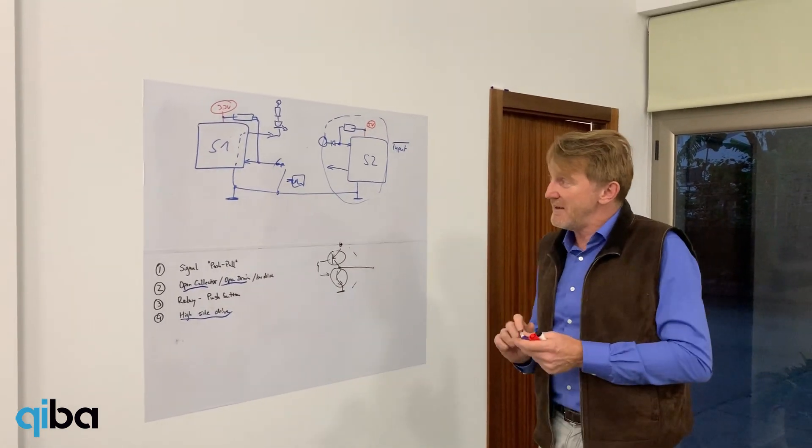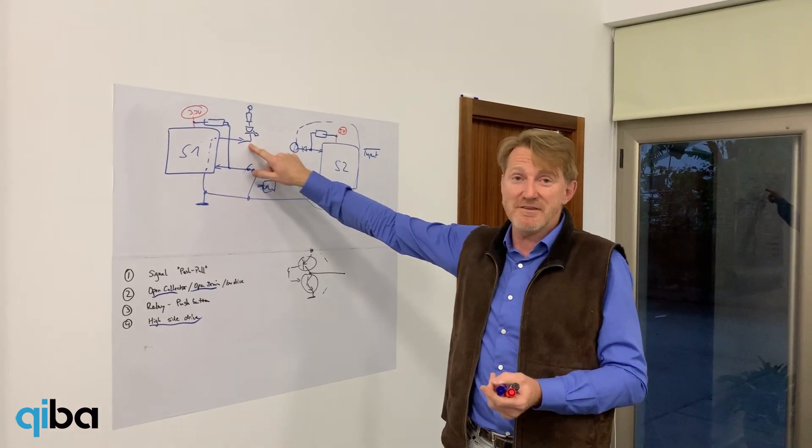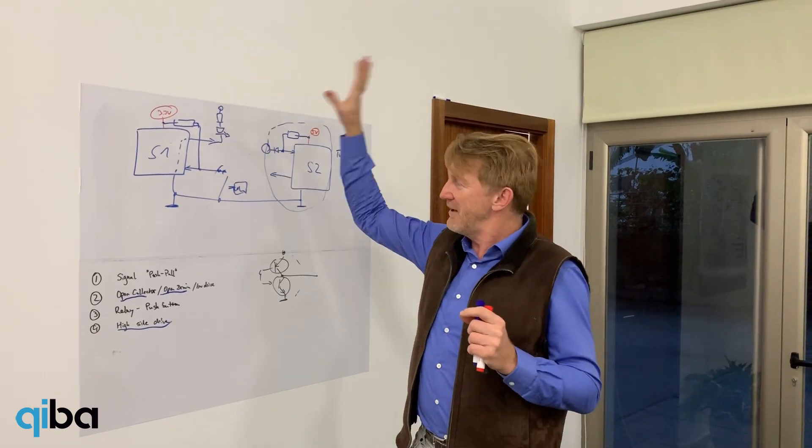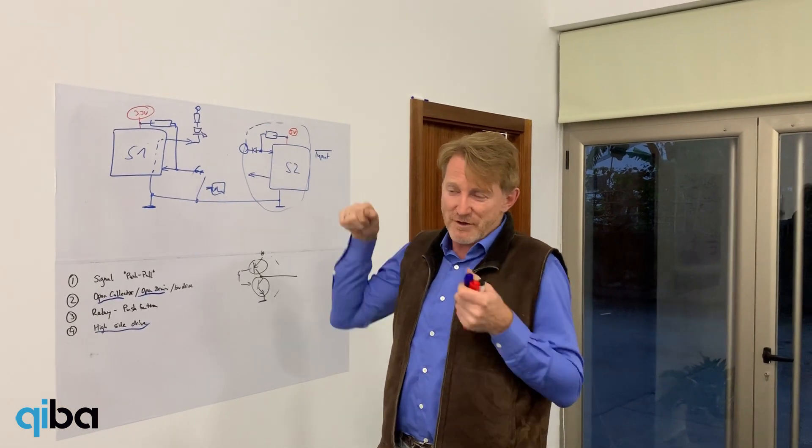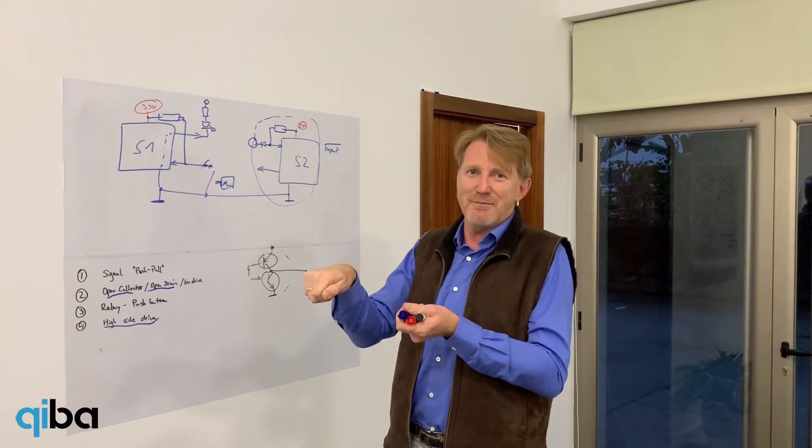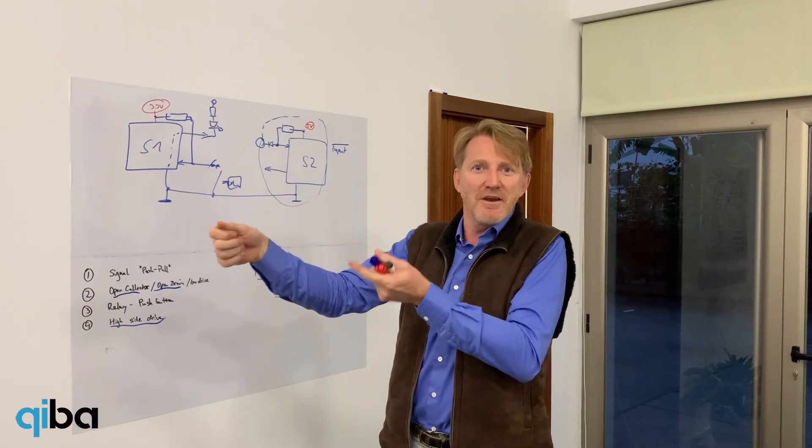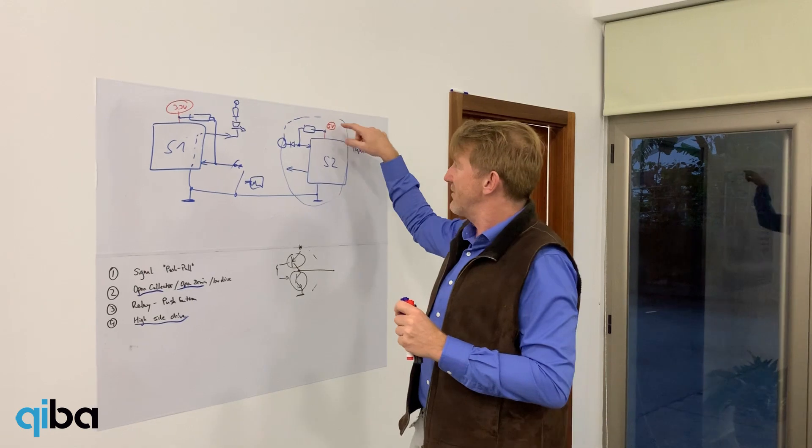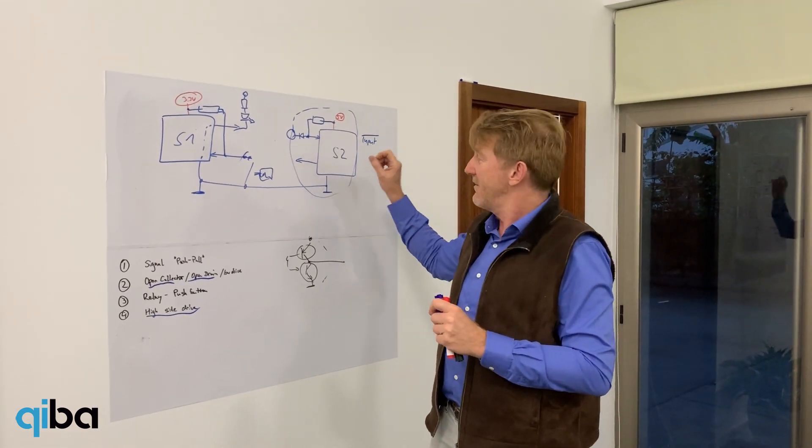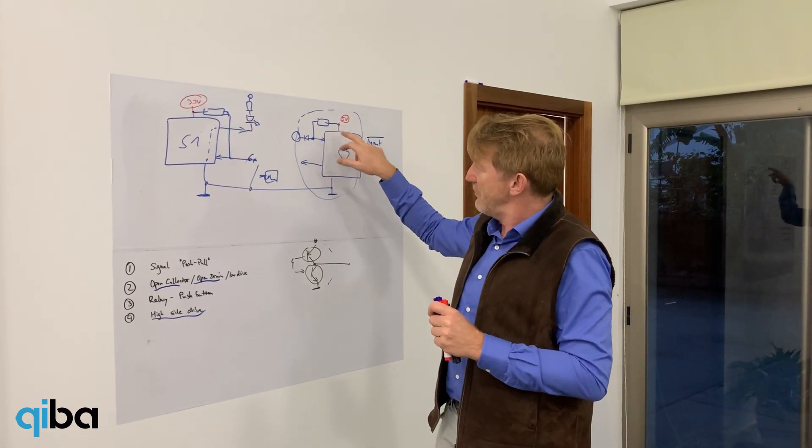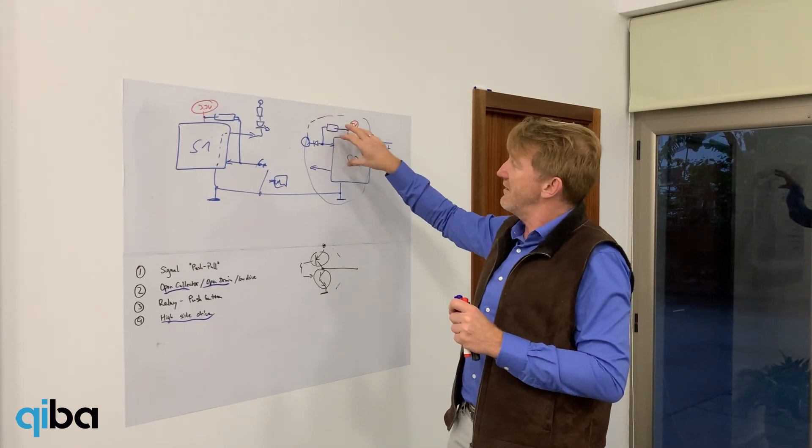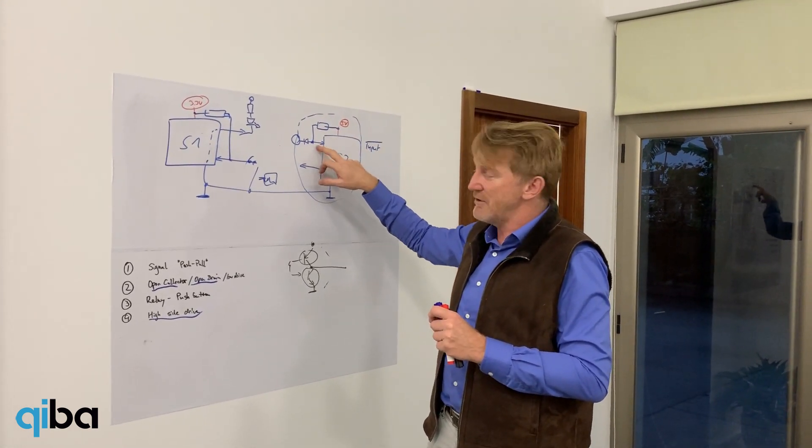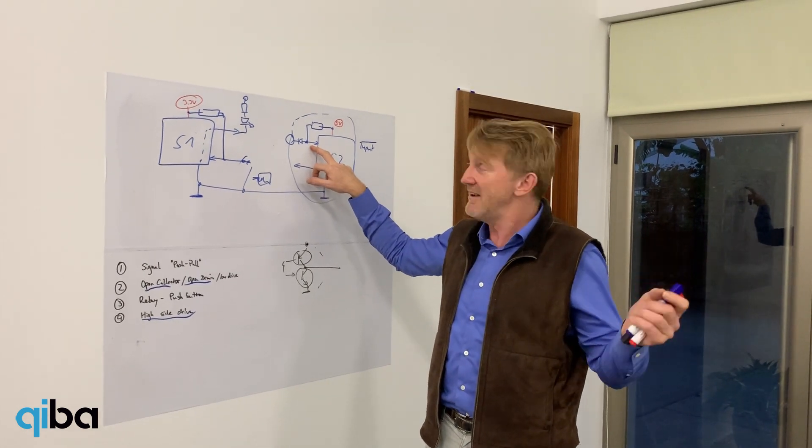So just to repeat that, on our outputs, our devices pull to ground when they are active. And if they are not active, they leave it floating open. So if you go with a voltmeter, you will not be able to measure 5V on an output if it's inactive, unless you pull it up with a resistor on the receiving side. And on the receiving side, our inputs have their pull up and diode. So that means that when the input is not connected, it is clearly inactive.